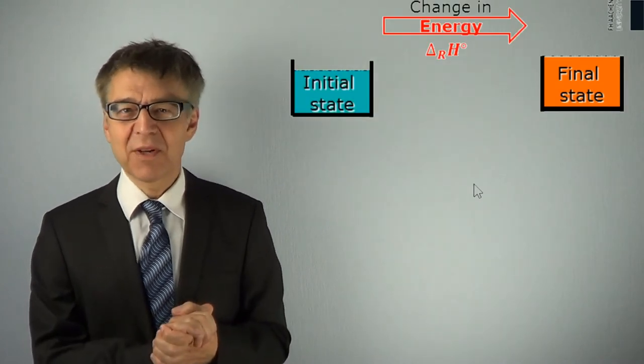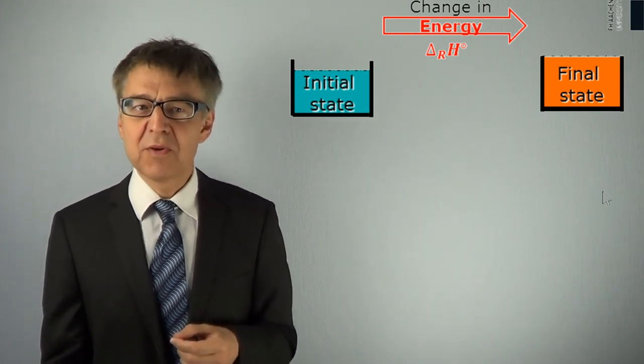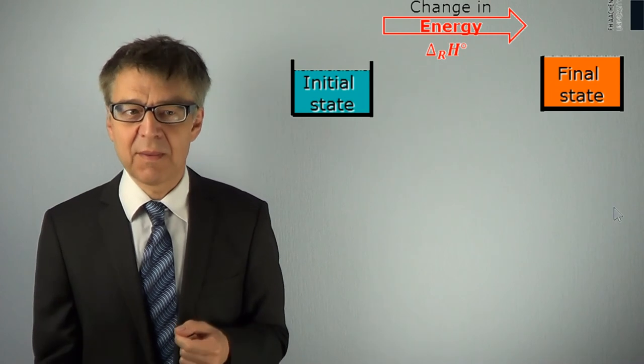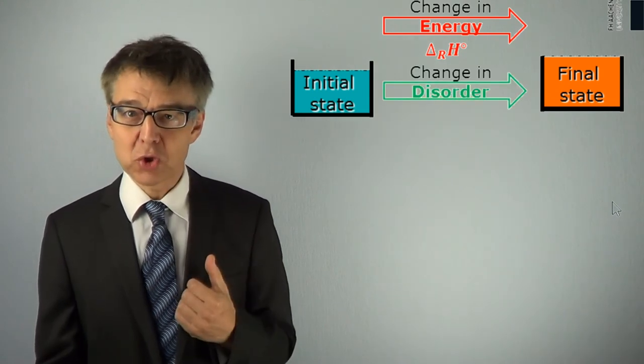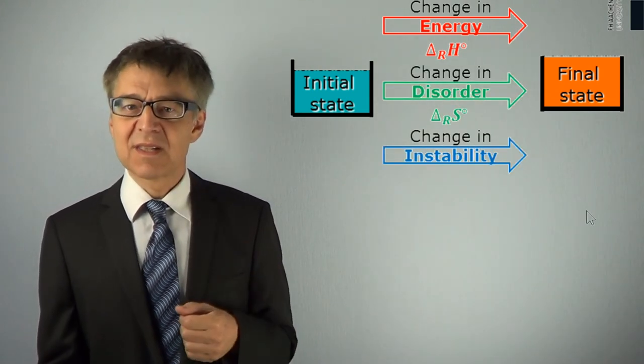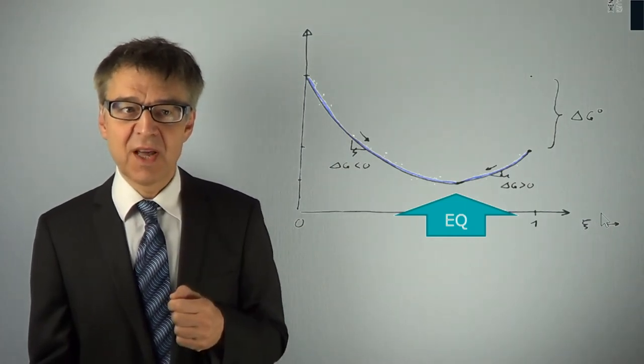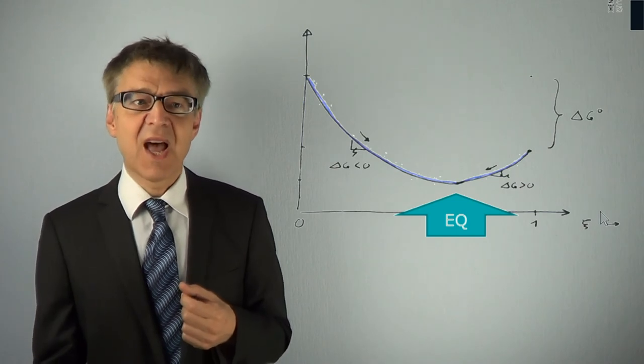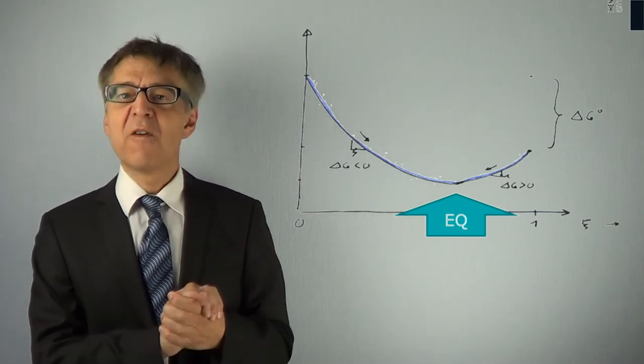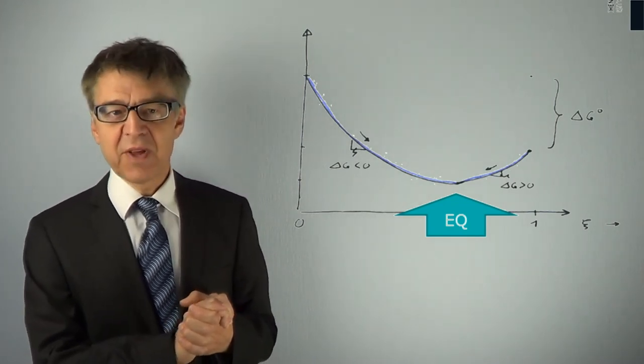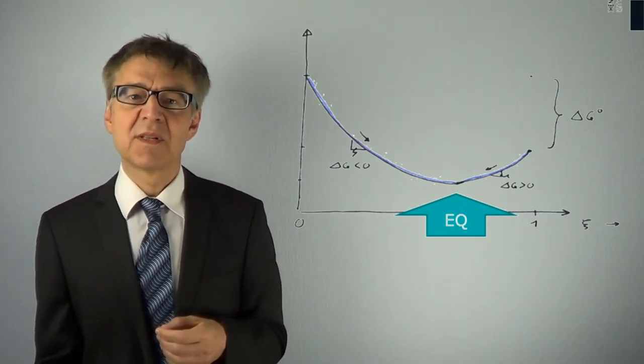Chemical thermodynamics in a nutshell. Enthalpy, entropy and Gibbs free energy are the most important variables in thermodynamics. Each process can be characterized by specifying delta H, delta S and delta G. H is a measure of energy, S is a measure of chaos, and G is a measure of instability of the system. Of particular importance is Gibbs free energy profile of a process, since its minimum determines equilibrium.